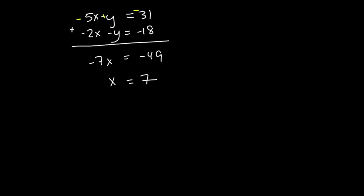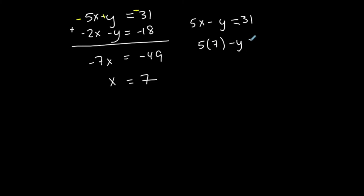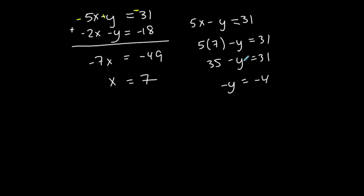Now I have x. The next thing to find is y, and I can use either equation. Using the first one: 5x minus y equals 31, so 5 times 7 minus y equals 31. That's 35 minus y equals 31. Subtracting 35 from both sides gives negative y equals negative 4, so y equals 4.